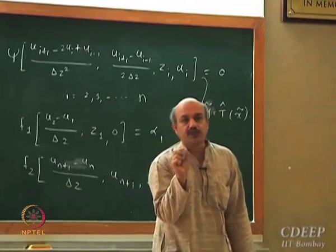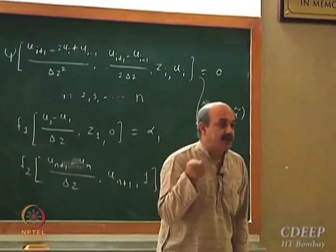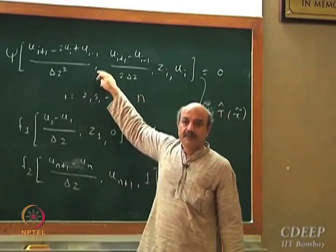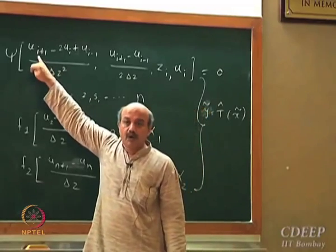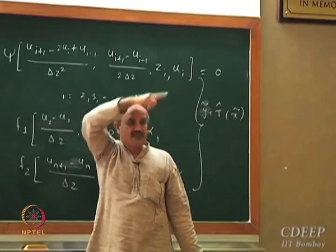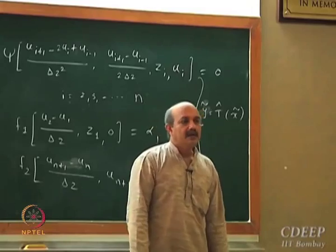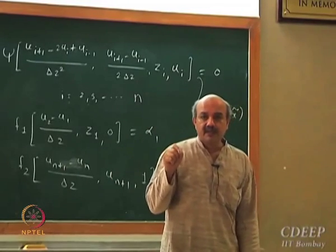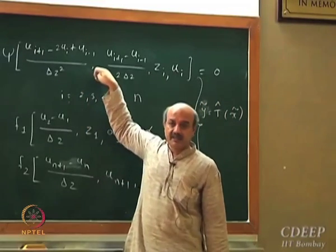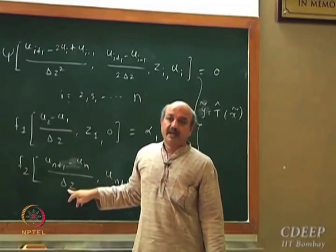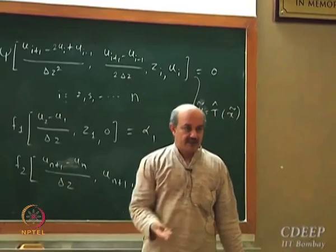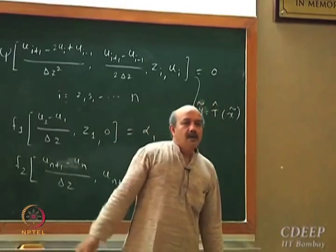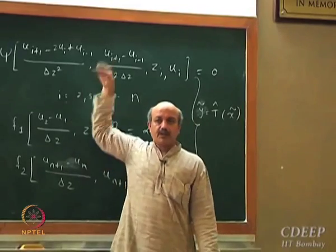If you reduce delta-z, you get a better and better solution, but the price is that smaller delta-z means more equations. These equations are coupled — the i-th equation requires u values at i+1 and i-1. For example, taking 100 internal points gives 100 equations, plus two additional equations from boundary conditions, giving 102 equations in 102 unknowns to solve simultaneously. This can be solved using Newton-Raphson, or if the equations are linear, using Gaussian elimination.